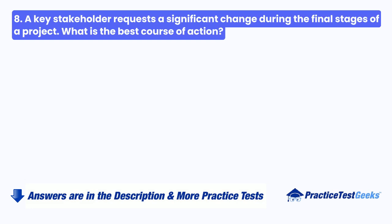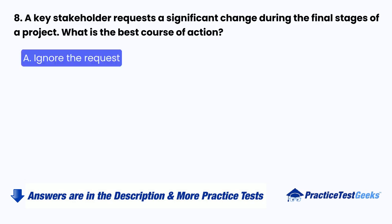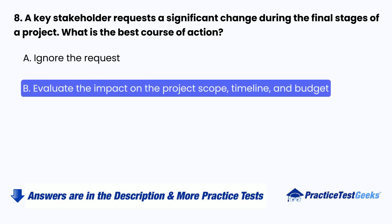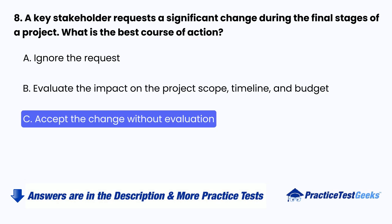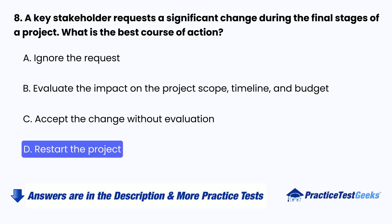Question 8: A key stakeholder requests a significant change during the final stages of a project. What is the best course of action? A. Ignore the request. B. Evaluate the impact on the project scope, timeline, and budget. C. Accept the change without evaluation. D. Restart the project.